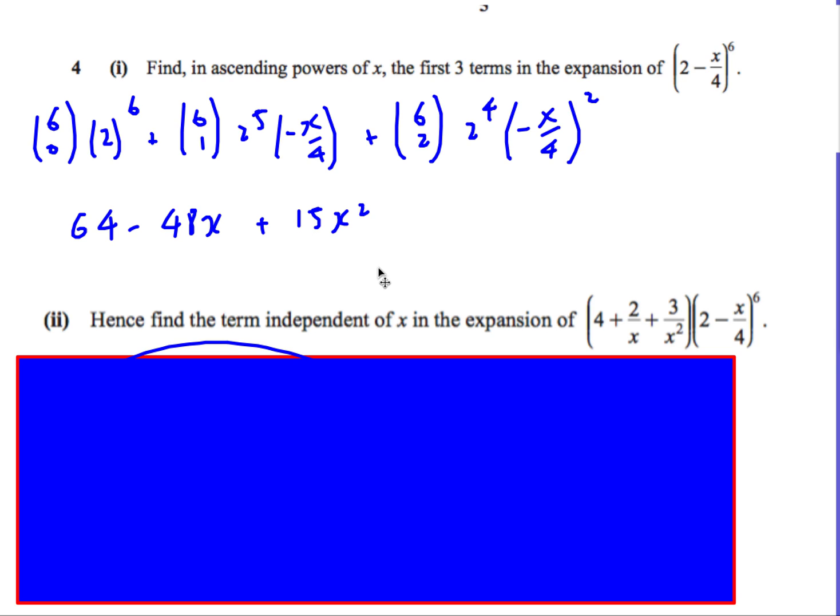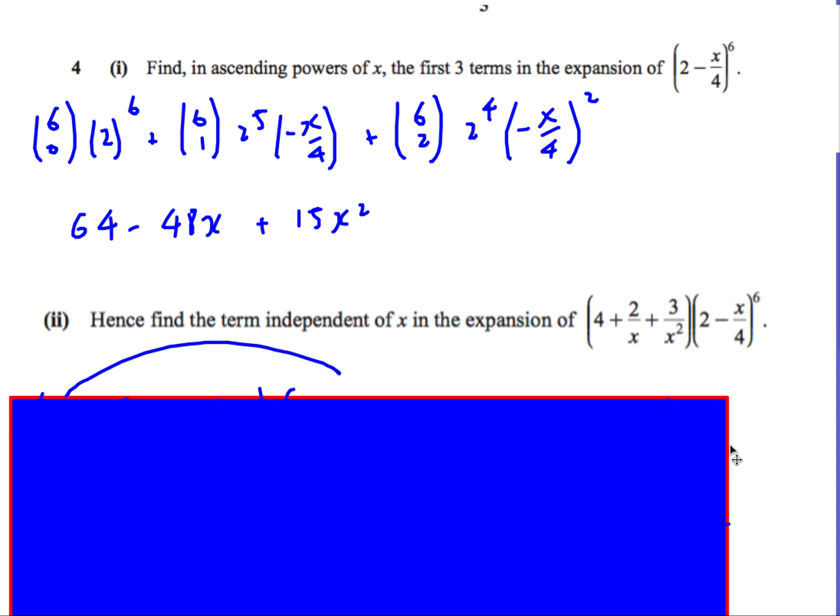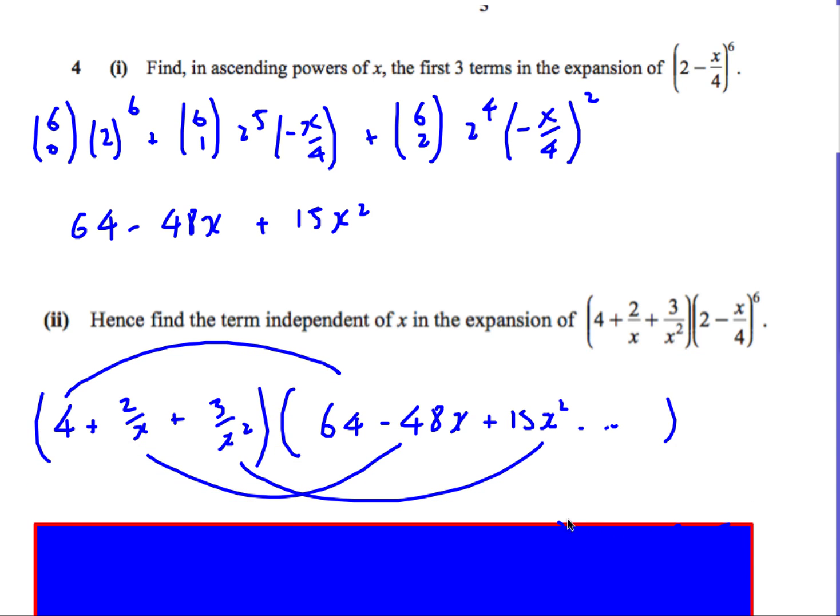Now, the second part is a bit more... We've got a bit more work to do. Hence, find the term independent of x in this expansion. Now, look at the connection. We've already got the 2 minus x over 4 to the 6. We've already done this bit, but they've now given us a new bracket to multiply by. So we look at this and go, well, let's write out our answer from the previous question. We only care about this part of the expansion. We don't care about the rest because we're only looking for the term independent of x. If we do anything extra, whatever we times it by here, we're not going to get anything independent of x.